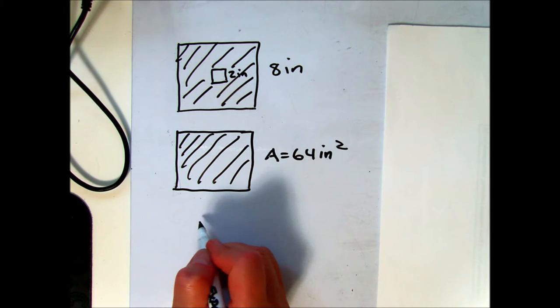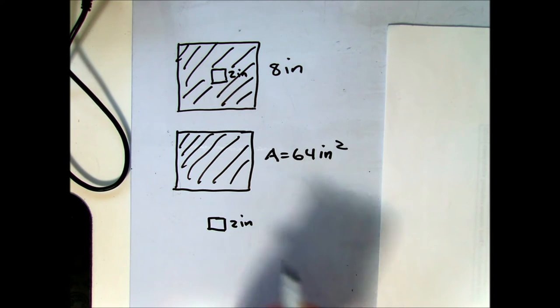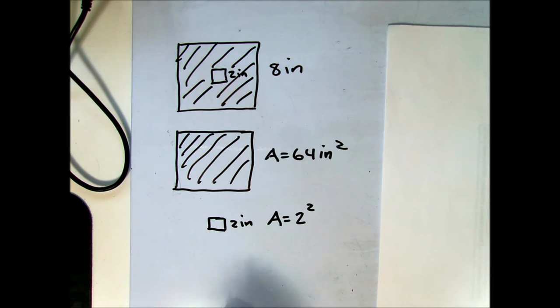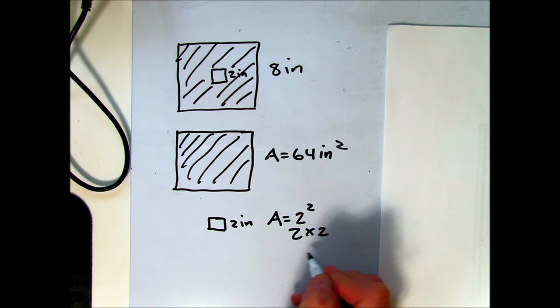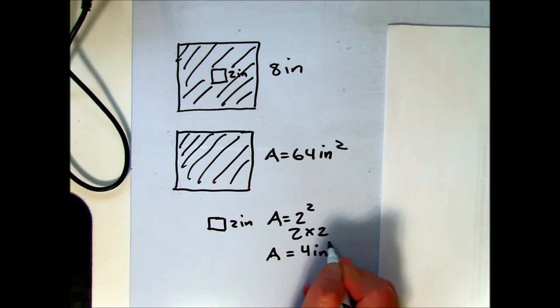we can calculate the area of the small square opening by plugging in that dimension into the area of a square formula. So area equals 2 squared. 2 times 2 is 4. So the area of the small square is 4 inches squared.